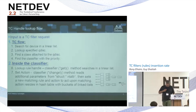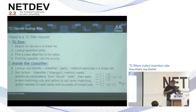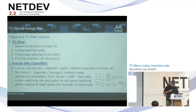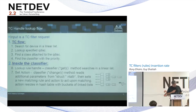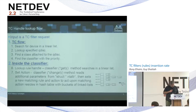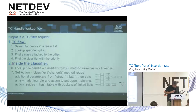I want to describe how TC handles lookup in the kernel. In the TC flow, there is a search for the device — it's a linear search — then a lookup for a specific qdisc, finding the class attached to the qdisc, finding the classifier, and inside the classifier doing a lookup for the handle with a classifier get. This is a linear search method, and then you set the action with the change.